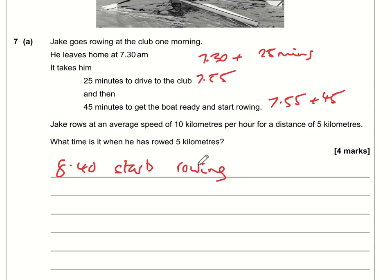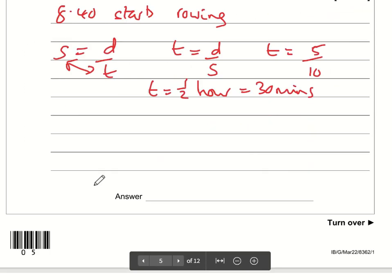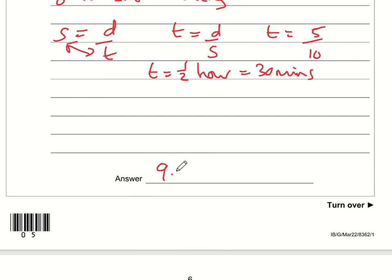So what we want to know is what the time is after he's rowed 5 kilometers. How long does it take him to row 5 kilometers? Well we know that speed is the distance divided by time. Time is the distance divided by the speed. The distance is 5 kilometers. So the time is 5 kilometers divided by the speed which is 10. 5 over 10 is the same as a half. So the time is one half of an hour which is 30 minutes. If we add 30 minutes onto 8:40 that takes us up till 9:10. So the answer is 10 past 9.